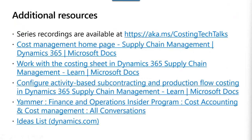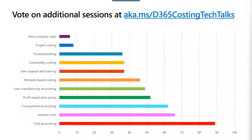We've pulled together some resources. You can find recordings at aka.ms/costing-tech-talks. We encourage you to visit the doc site and check out new and updated content created throughout this series. There are specific links for learn content related to the costing sheet, configuring activity-based subcontracting, and production flow costing. Connect with the product team on the Yammer site and submit ideas to the ideas site. If you haven't completed our survey about additional costing topics, we invite you to do so — the survey link is aka.ms/d365-costing-tech-talks.